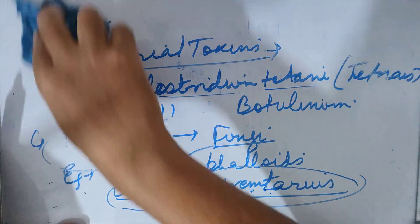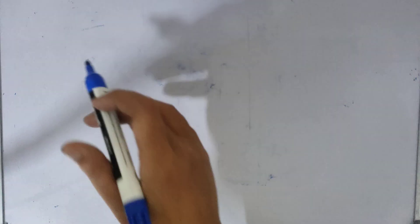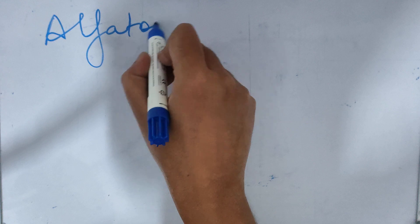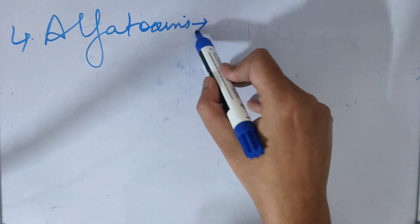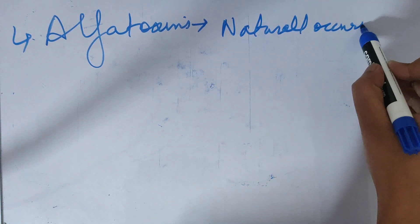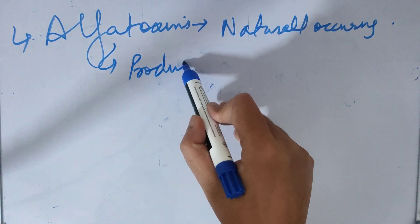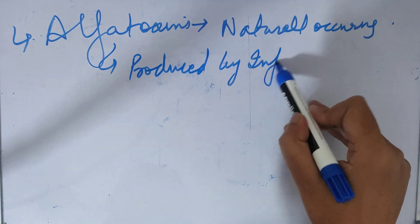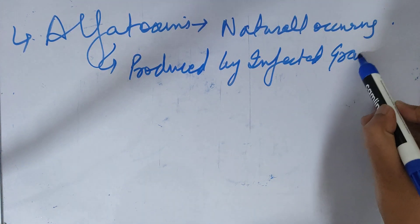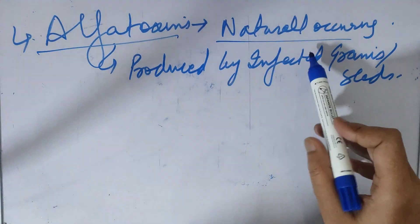Also we have next type, alpha toxins. Alpha toxins are naturally occurring toxins. These are produced by infected grain seeds, produced by infected grains.